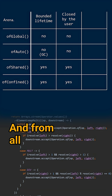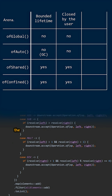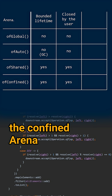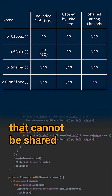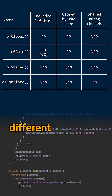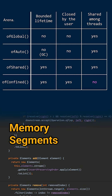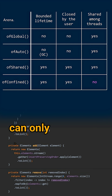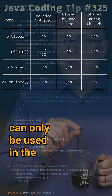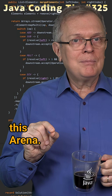From all these four arenas, the confined arena is the only one that cannot be shared among different threads, meaning that the memory segments you created from it can only be used in the thread that created this arena.